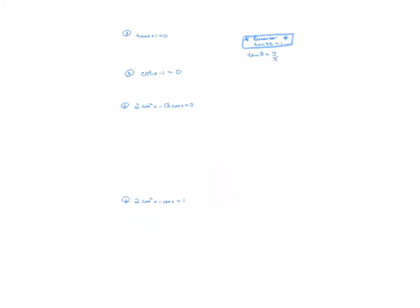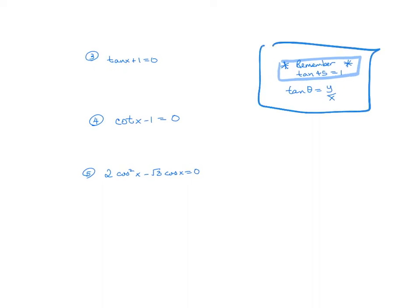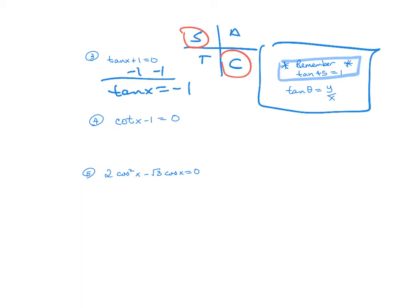Let's try number 3. Remember that the tangent of 45 equals 1. So if I subtract 1, tangent of x equals negative 1. I need to do my all students take calculus and figure out which quadrants tangent is negative in — tangent is negative in quadrants 2 and 4. My reference angle is 45. This one is 180 minus 45, so 135. And then 360 minus 45 gives 315. The answer to number 3 is 135 degrees and 315 degrees.